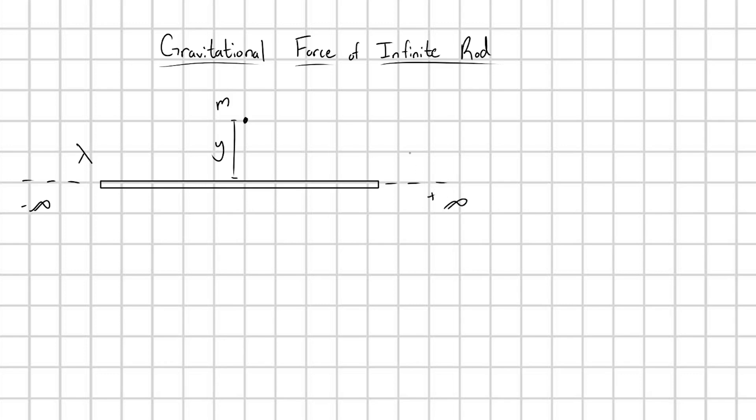Now first question, is this a reasonable problem to consider to have this rod that's infinitely long? So the real condition that we're interested in is the condition where y, this height here, would be significantly less than the length of the rod, if we were to call that l. If that's the case, if y is significantly less than l, then to this point mass m here, the rod would look like it was infinitely long.